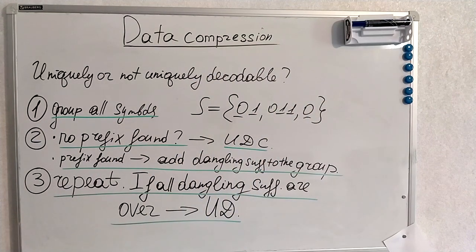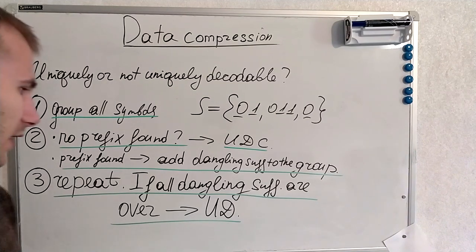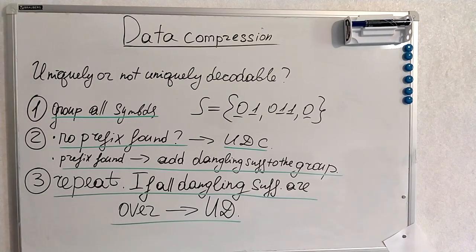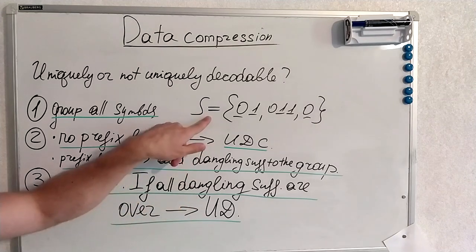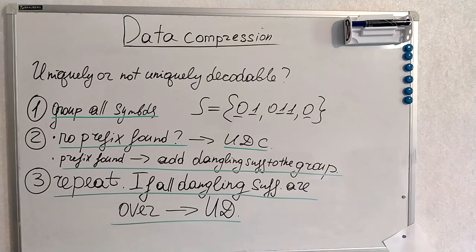We now find the prefixes. If no prefixes are found, as I already said, prefix-free codes are uniquely decodable. If the prefix is found, add the dangling suffix to the group, like to here, and repeat it in a similar fashion.